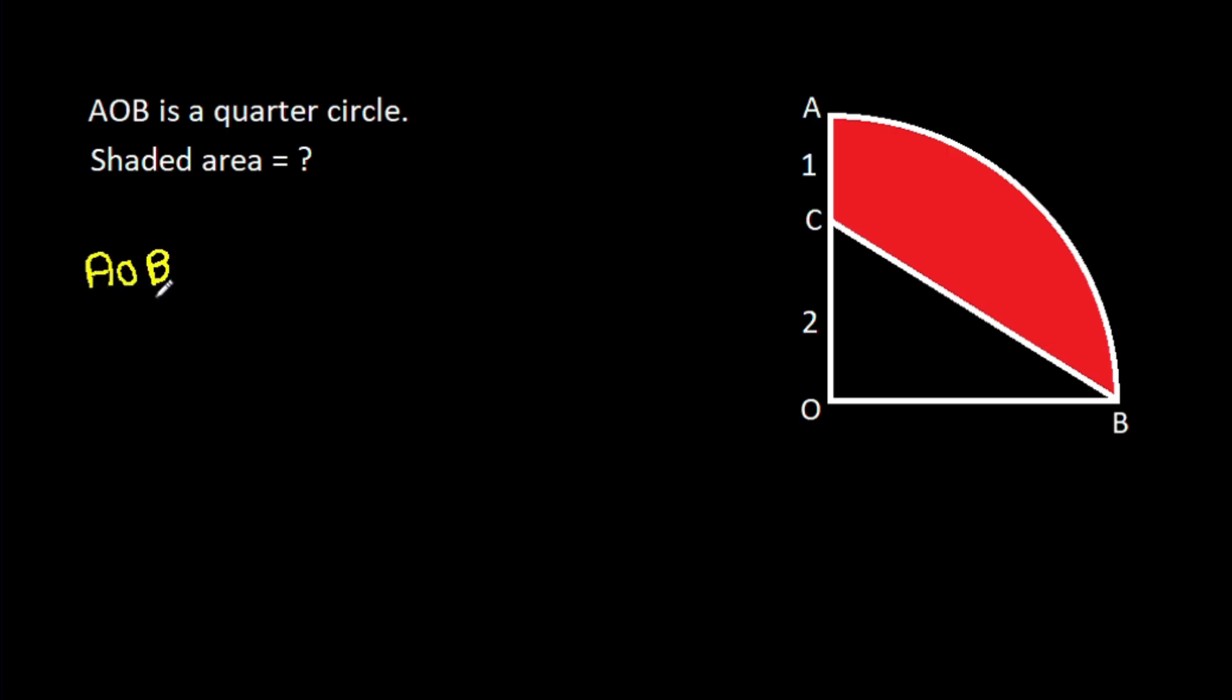So AOB, it is a quarter circle. That means angle AOB will be 90 degrees.